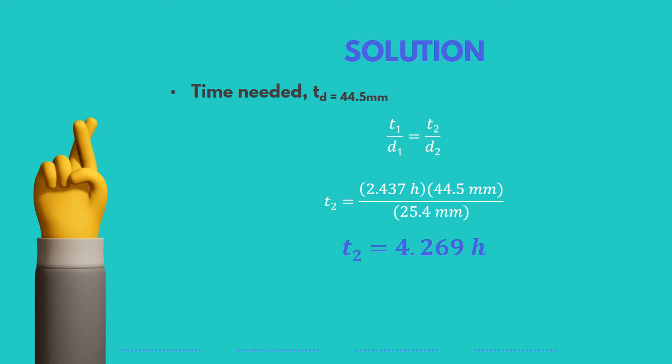If it takes 2.437 hours to dry a 25.4 millimeter thick layer of the material, then how long will it take for the same material to dry at a depth of 44.5 millimeters? We just do a simple ratio and find a time period of 4.269 hours. This is a reasonable result since the thicker the material is, the longer the time needed to dry it to the desired moisture content.